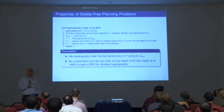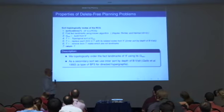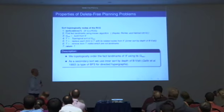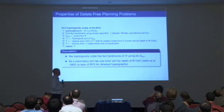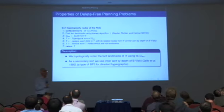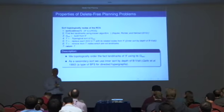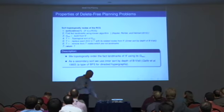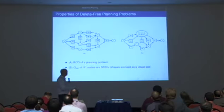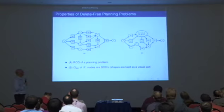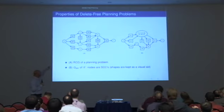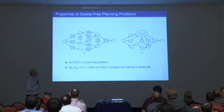The first step is to obtain a set of landmarks and then order them. The ordering routine is very simple: we generate the graph of strongly connected components from the relaxed causal graph — that's an acyclic graph — and sort the landmarks based on the ordering of the strongly connected components using any topological ordering. If you have a number of landmarks within a certain component, you can do a breadth-first search for hypergraphs to order them. For example, you have the relaxed causal graph on the left, with landmarks L1 and L2, and on the right the graph of strongly connected components shows that L1 is ordered before L2.